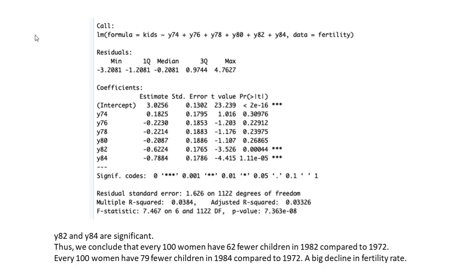Can you interpret the estimate for the variable yA4? It's negative 0.788 — let's round that to negative 0.79. This negative 0.79 indicates that every 100 women in 1984 have 79 fewer children than every 100 women in 1972. A big decline over the years. This is how you interpret the results from a pooled data analysis.